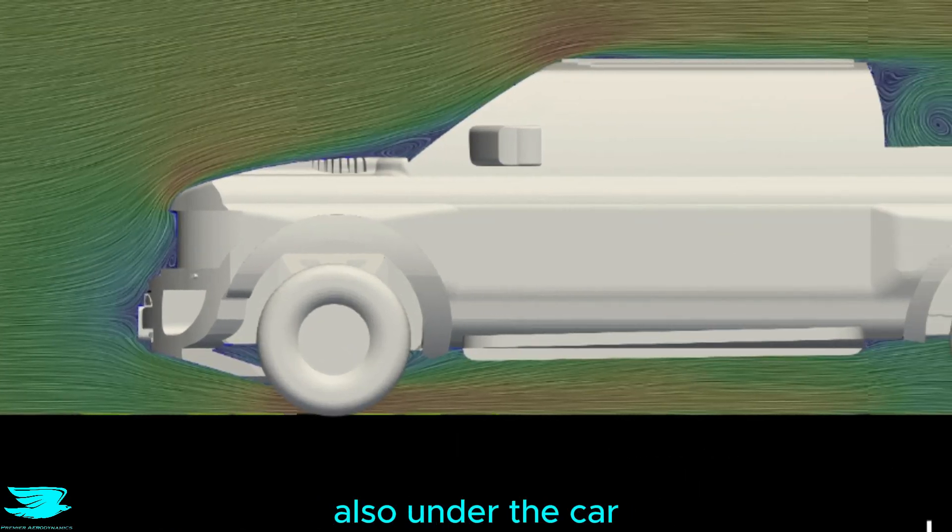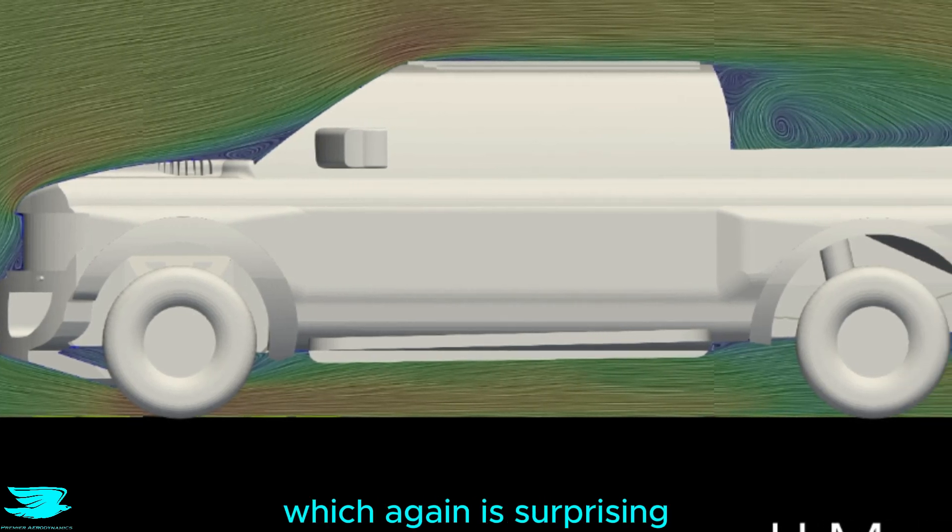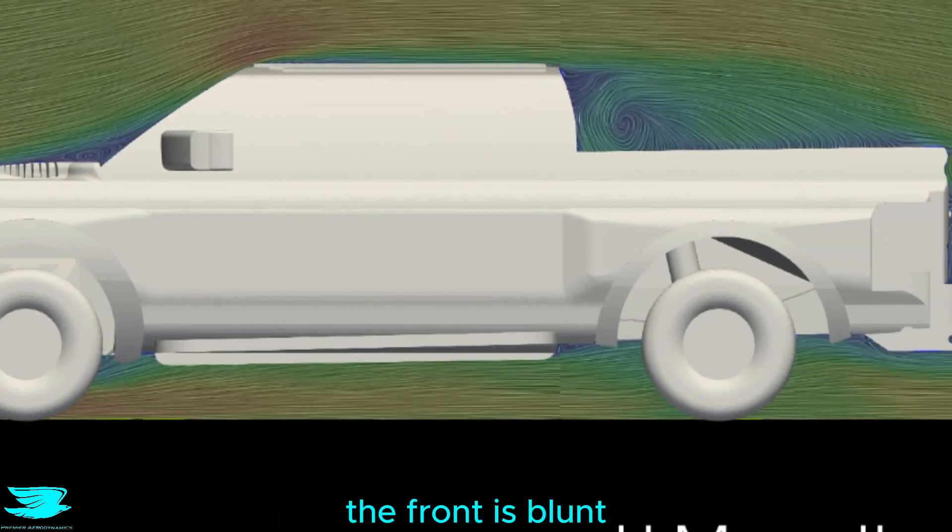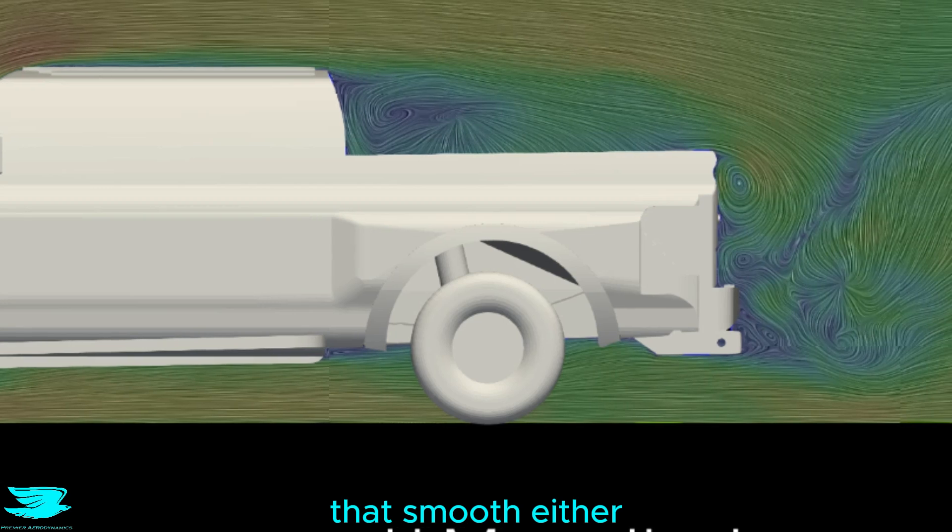Also under the car, the flow stays attached very nicely, which again is surprising not only because the front is blunt, but because the underbody isn't that smooth either.